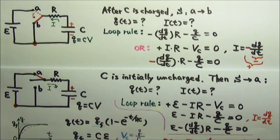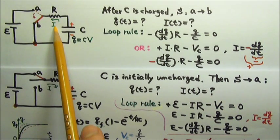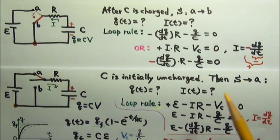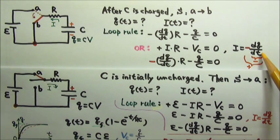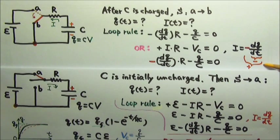When we use the correct discharging current direction, the current is positive. Therefore, I equals negative dQ/dt so that the correct direction current can be positive.